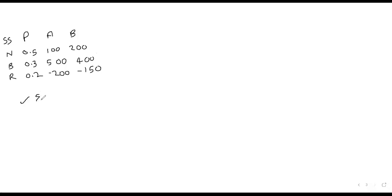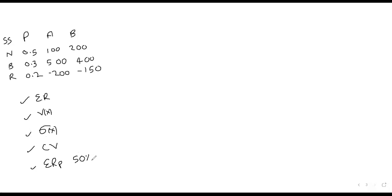We want to calculate four things: number one, the expected returns for each; number two, the standard deviation for each; number three and four, the coefficient of variation. Then we'll also be asked for the portfolio expected return — supposing there's a 50% investment in each — the portfolio standard deviation, the covariance, the correlation, and the portfolio standard deviation. This is a very common exam question.